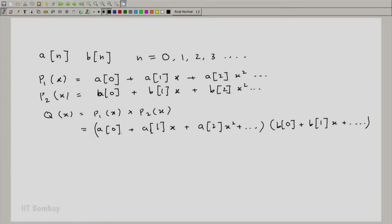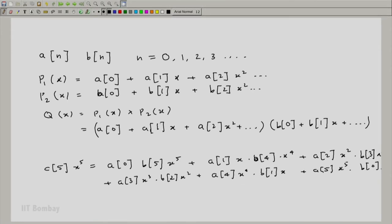What are the different ways to get x raised to 5? To get x raised to 5 you can take the constant term from here and the x raised to 5 term from here, or you can take the linear term from here and the x to the power 4 term here. There are six possible combinations in which you can end up with x raised to 5. What is that going to look like?